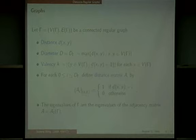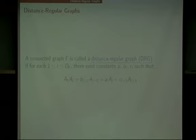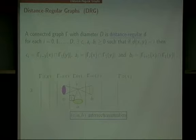Let me review the definition of distance regular graphs briefly, since yesterday it was already explained well. A given connected graph Gamma is called distance regular, simply DRG, if the following holds. Here S_i is the i-th distance matrix. Viewing this from a graph perspective: fix a vertex x and consider its distance partition. The graph is called DRG if for each i-th layer, there are exactly three constants such that for any vertex y in the i-th layer, there exist exactly C_i neighbors in the previous layer, A_i neighbors in itself, and B_i neighbors in the next layer.